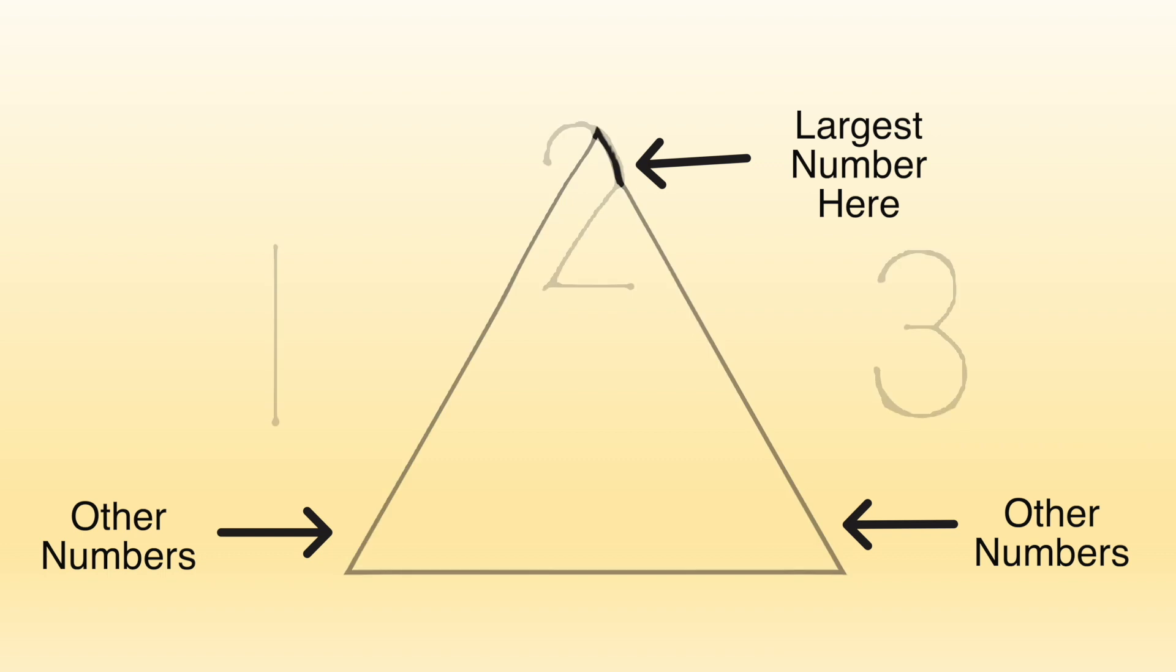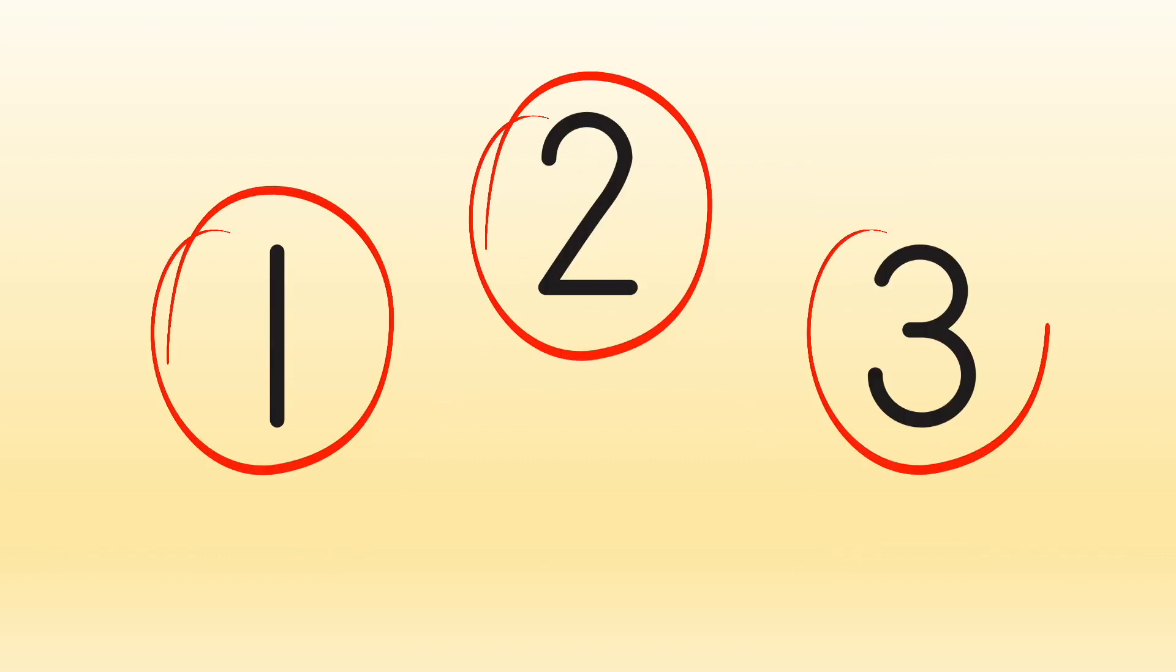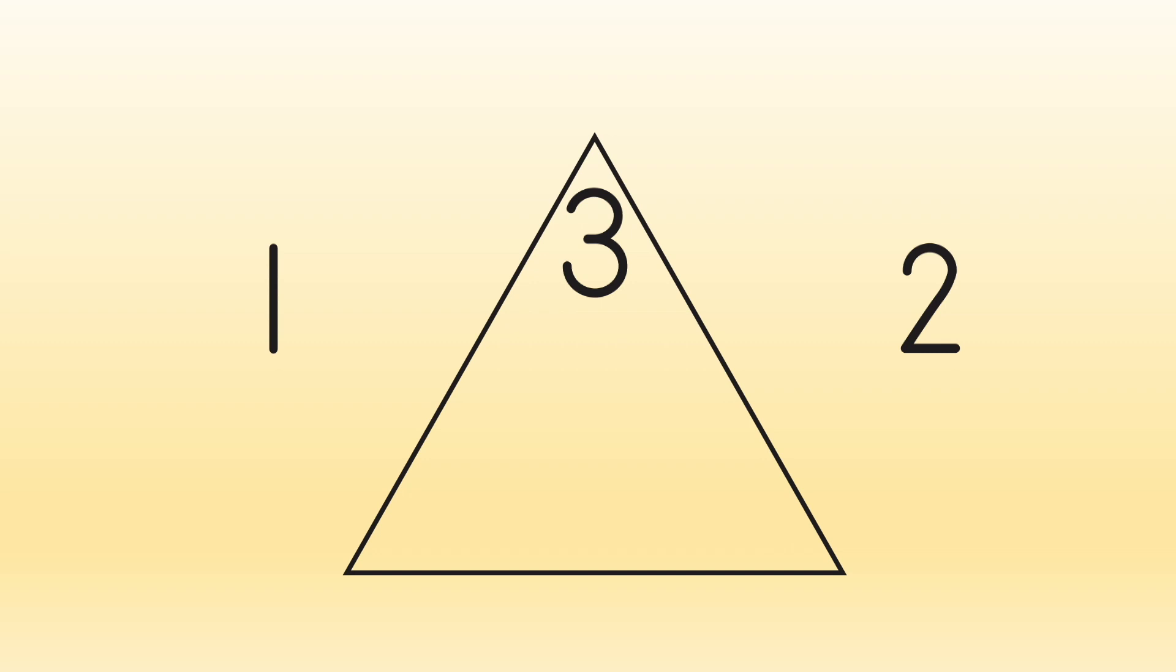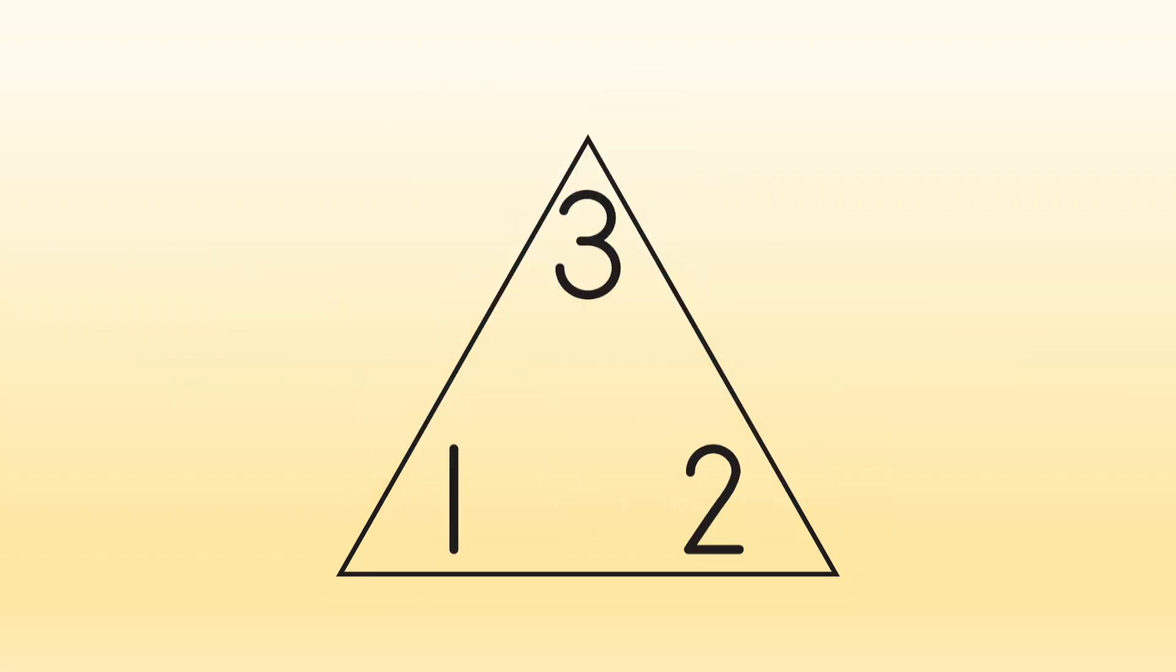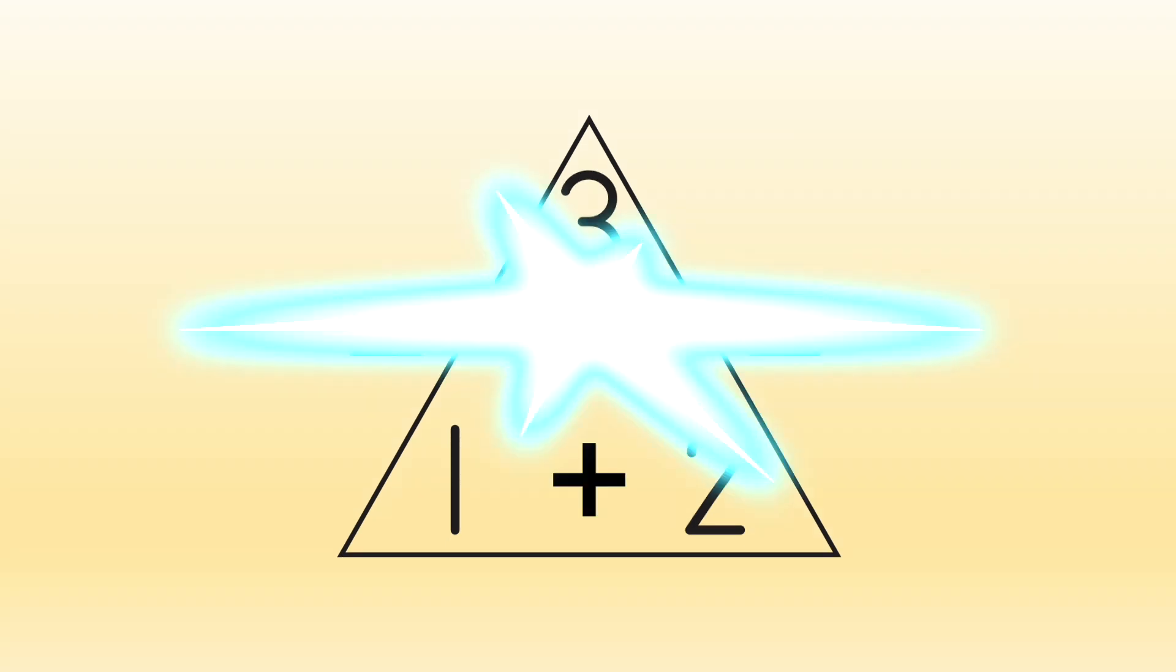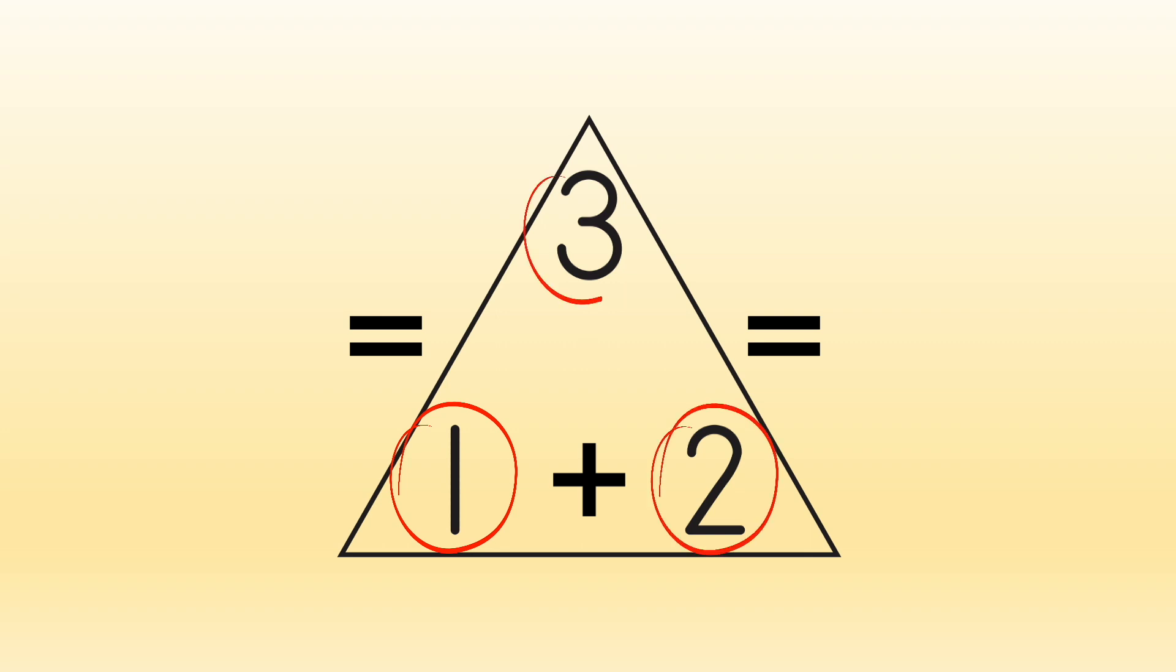Let's use the numbers 1, 2, and 3. These three numbers are an example of a Fact Family. So, 3 goes to the top, and 1 and 2 go to the bottom. When you start at the bottom, go over and get addition facts. Like this. 1 plus 2 equals 3. 2 plus 1 equals 3.